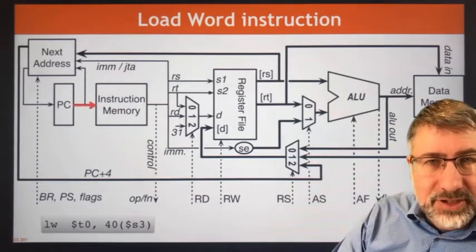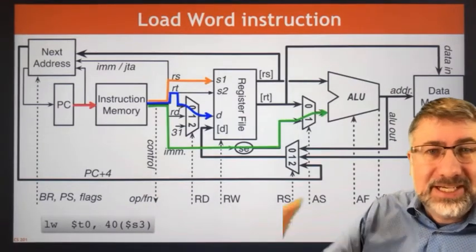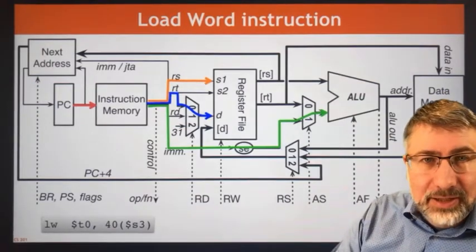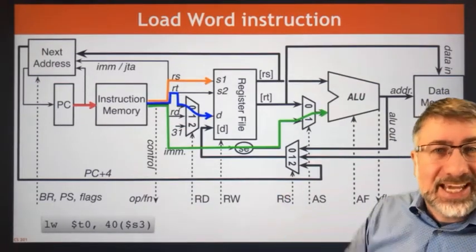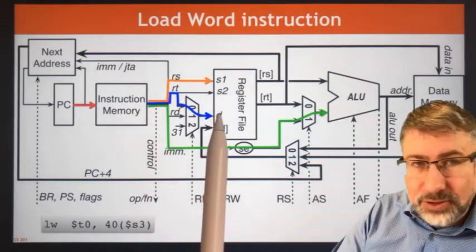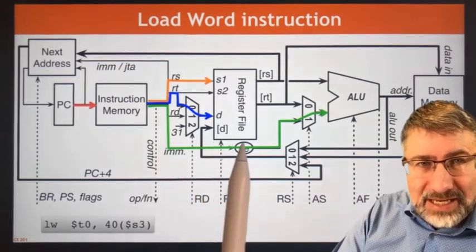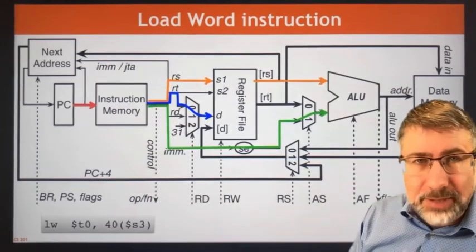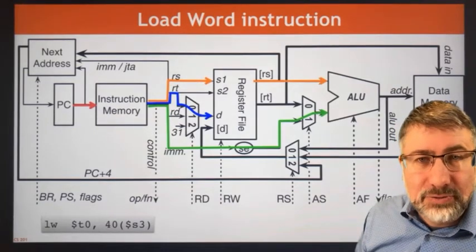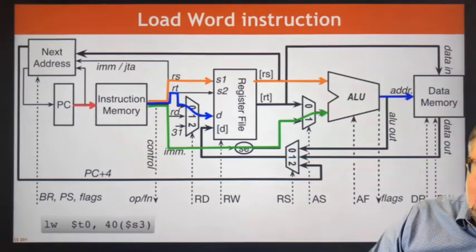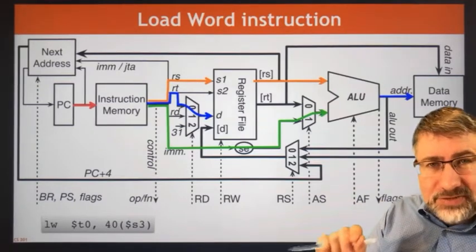The program counter addresses the instruction memory — that's always the first step, because until we've done that we don't know what instruction we're executing. Then the instruction memory loads up the instruction. Just like any other I-format instruction, RS addresses the register file, RT is used as the destination register, and the immediate value is presented to the ALU. RS is looked up in the register file and also presented to the ALU. Those two numbers are added together and the result is the effective address, which is presented to the data memory. The load and store operations differ a little bit here.